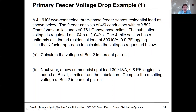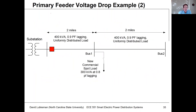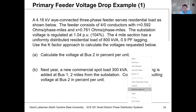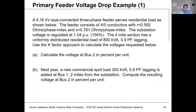Let's take a look at a couple of worked examples. In this first example, what we have is a 4.16 kV circuit, and we'll assume that it's supplying initially some residential load. The feeder consists of 4-aught conductors.